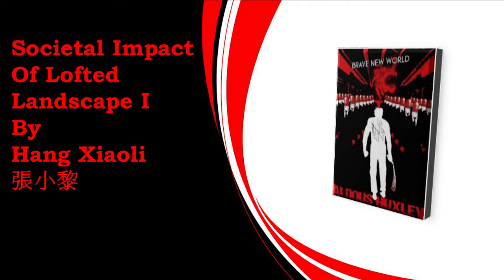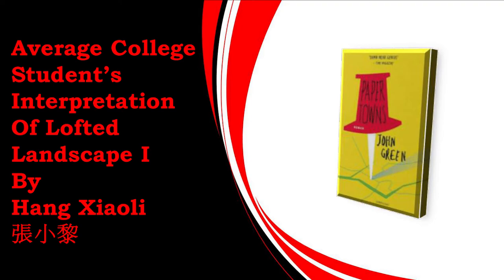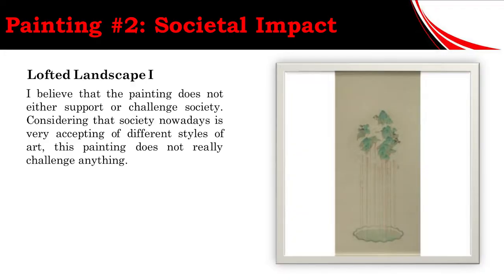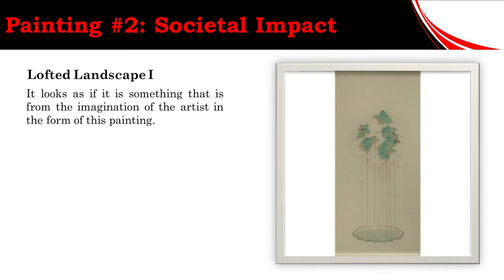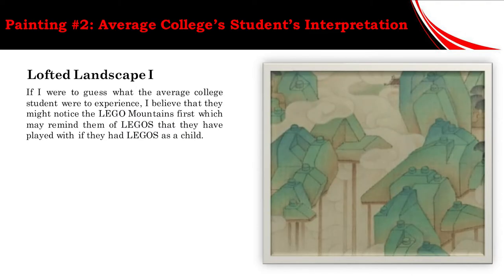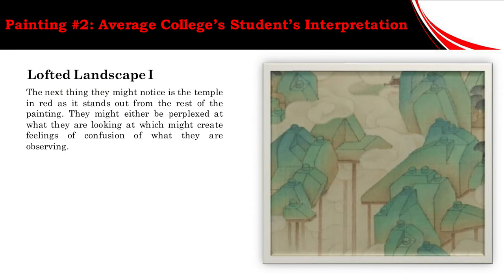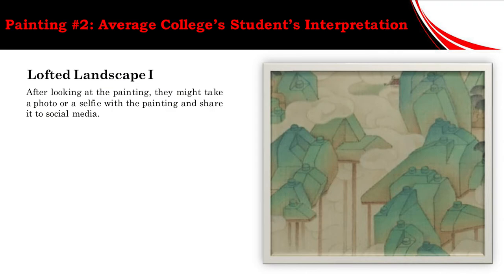Finally, we are going to talk about the societal impact and assume the average college student's interpretation of the contemporary painting Lofted Landscape. I believe that the painting does not either support or challenge society, considering that society nowadays is very accepting of different styles of art. It looks as if it is something from the imagination of the artist in the form of a painting. If I were to guess what the average college student would experience, I believe they might notice the Lego mountains first, which may remind them of Legos they had played with as a child. The next thing they might notice is the temple in red, as it stands out from the rest of the painting, and they might be perplexed at what they are looking at. After looking at the painting, they might take a photo or selfie and share it on social media.